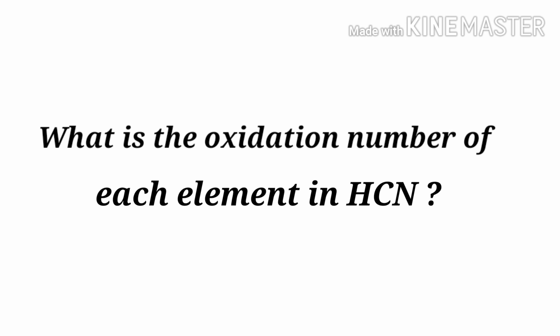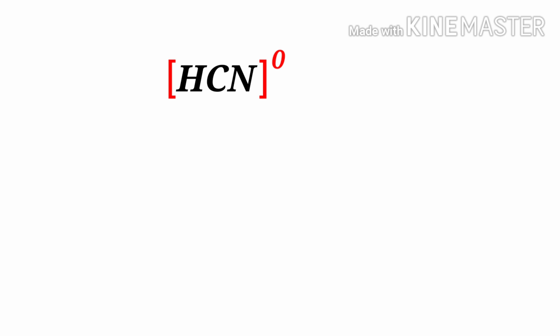What is the oxidation number of each element in hydrogen cyanide? Hydrogen cyanide is a neutral compound with overall oxidation number zero. Therefore, we know that the sum of the oxidation number of atoms is equal to zero.